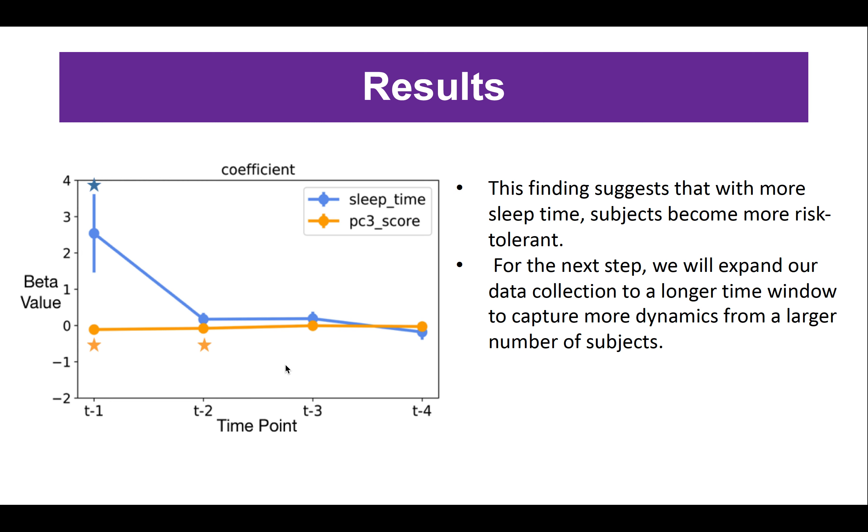Here are the results we found. Among all these activities, the sleep time duration one week ago can significantly predict the risk score at the current week. This finding suggests that with more sleep time last week, subjects become more risk tolerant. Even though we did not find other significant results, in our next step, we will expand our data collection to a longer time window in order to capture more dynamics from a larger number of subjects. Thank you for your time.